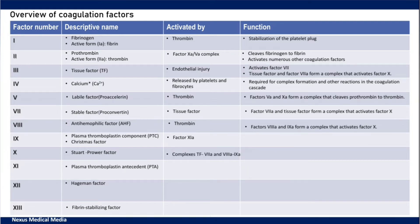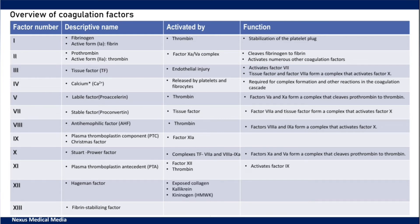Factor 10 is activated by two complexes: tissue factor with active factor 7, and another complex of active factor 8 and factor 9. The active forms of factor 10 and factor 5 will form a complex that cleaves prothrombin into thrombin. Factor 11 is activated by factor 12 and thrombin, and its function is to activate factor 9. Factor 12 is activated by exposed collagen, kallikrein, and high molecular weight kininogen. Its function is activation of factor 11 and the kallikrein system, which leads to production of bradykinin.